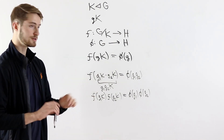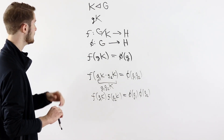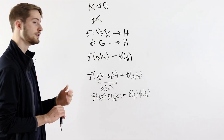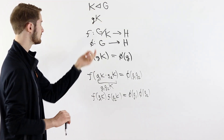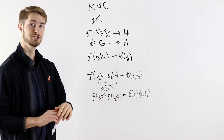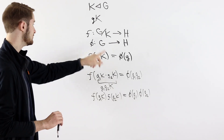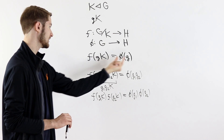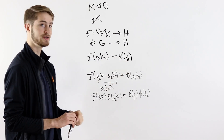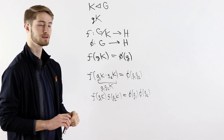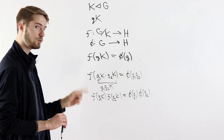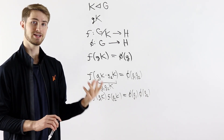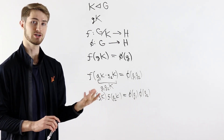So it seems like we're done. If we want to define a homomorphism on the quotient group G mod K, all we have to do is find a homomorphism on the original group G and use that to define a function on the cosets by picking a coset representative and plugging it into phi. There is one problem here though: we don't know whether the function F is well-defined.